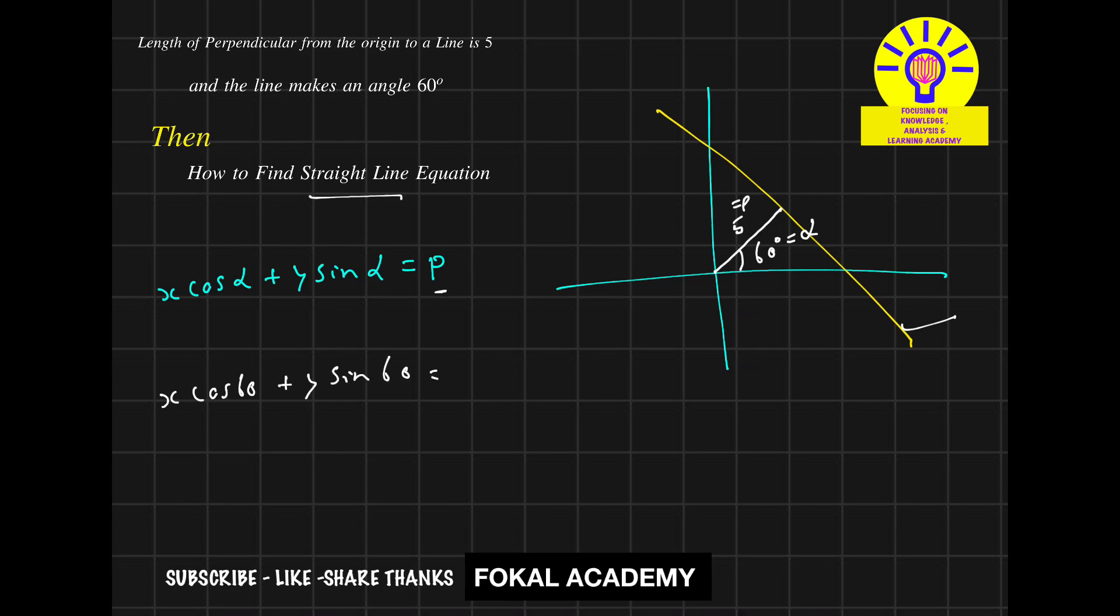And P is the distance from origin to the required line equation. That is 5 units given. That is 5. So that becomes as x times 1 by 2 plus y into sin 60 is root 3 by 2 that's equal to 5.